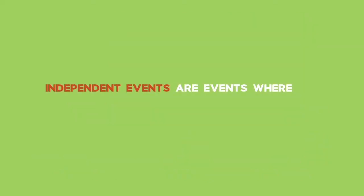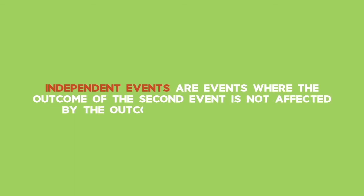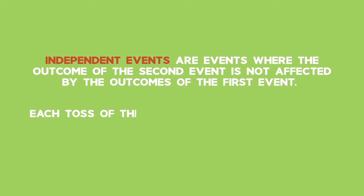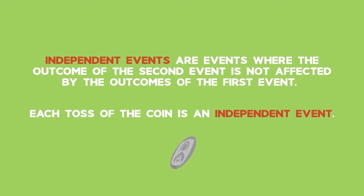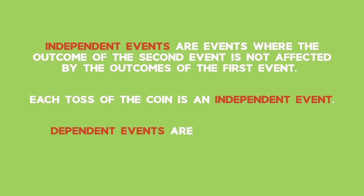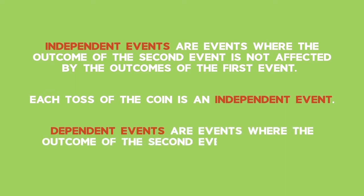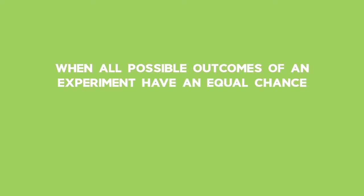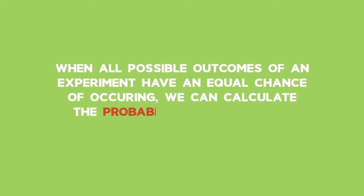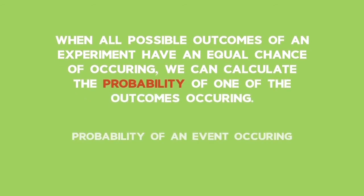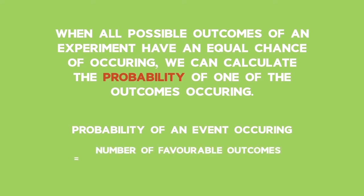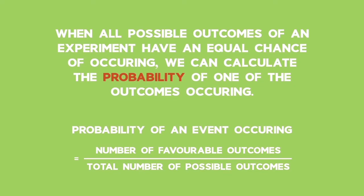Independent events are events where the outcome of the second event is not affected by the outcome of the first event. When a previous outcome does influence another outcome, we say the events are dependent. Dependent events are events where the outcome of the second event is influenced by the outcome of the first event. When all possible outcomes of an experiment have an equal chance of occurring, we can calculate the probability of one of the outcomes occurring. The probability of an event occurring is the number of favorable outcomes divided by the number of possible outcomes in the sample space.